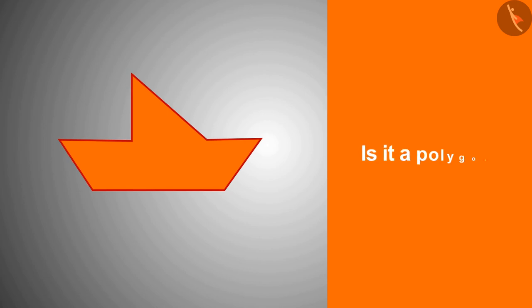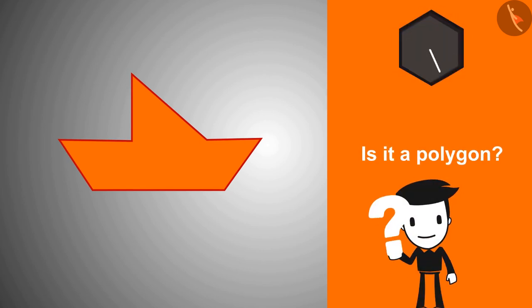What do you think about this? Perfect, this is a polygon. Can you name it? Because it has seven arms, it is a heptagon.